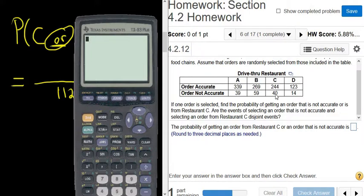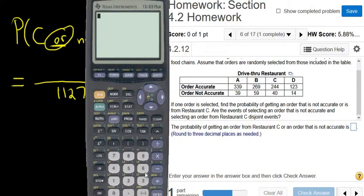So you circle the C's and you circle the not accurate. So the C's are these here, 244 and 40. And the not accurate is the bottom row. So I'm just going to add up this bottom row and include the 244. So it would be 39 plus 59 because that's part of the not accurate. So 59 plus 40.